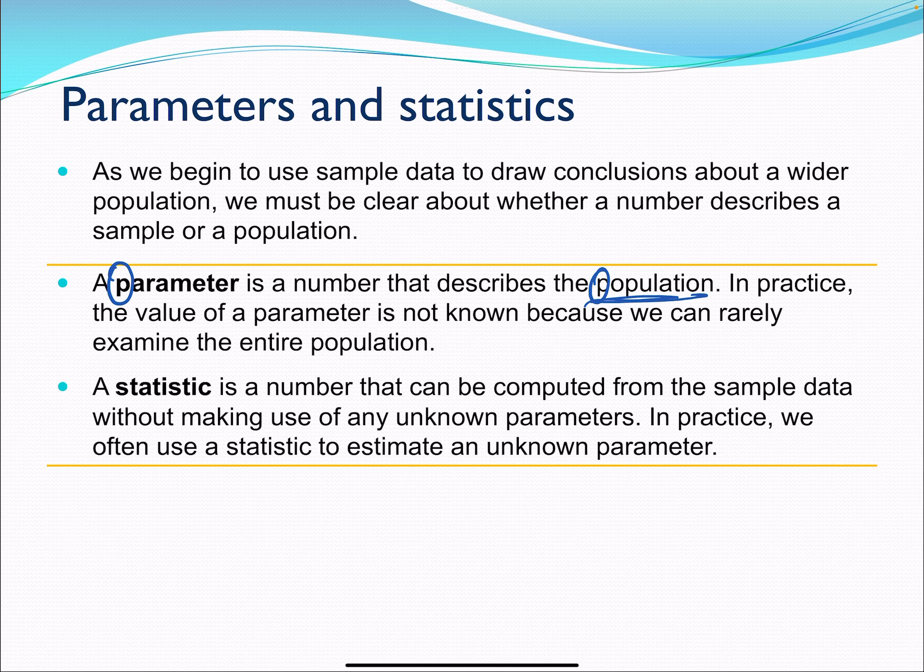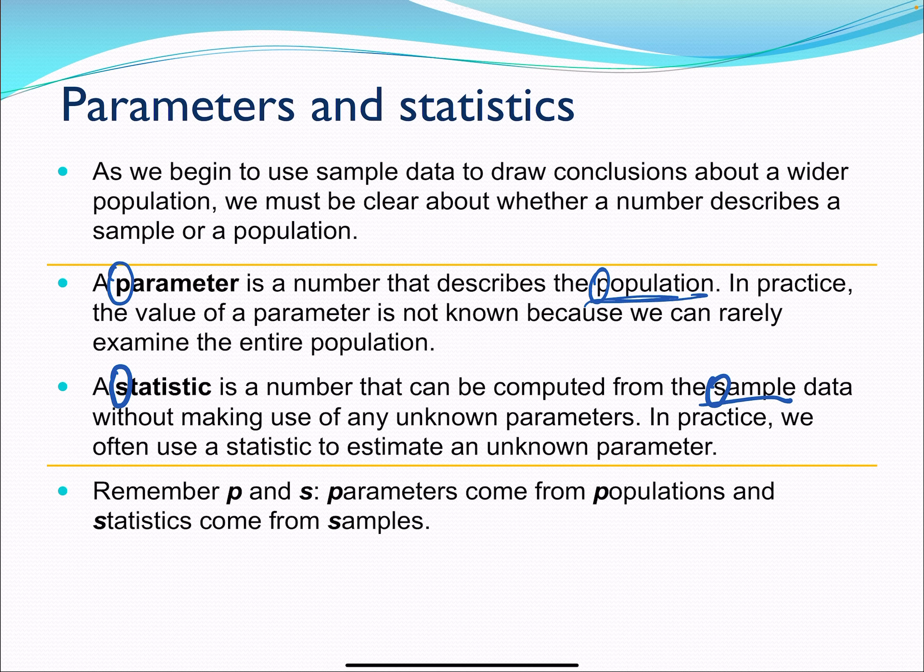A statistic is computed from our sample. So we've got a sample statistic, S and S. We use our statistics often to estimate an unknown parameter. Remember the P and S: P parameters from populations and statistics comes from sample.